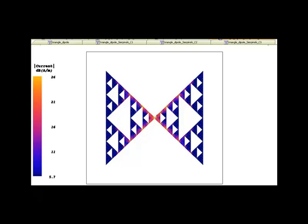And we can see the current flowing out from the source of the antenna, the feed, out along the antenna. And it's essentially exciting the antenna in the half wavelength resonance.